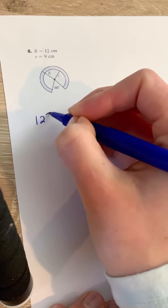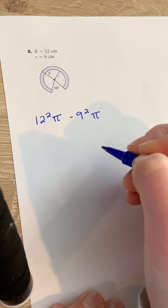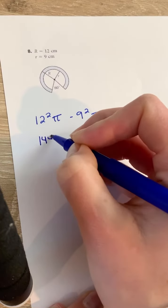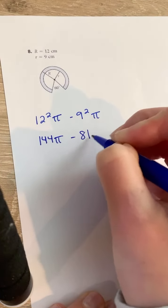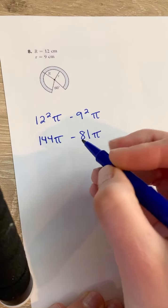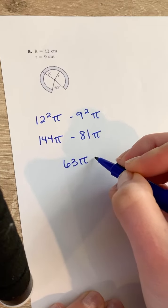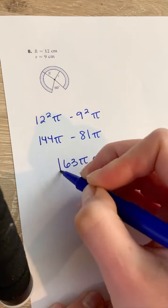You'll have 12 squared pi minus 9 squared pi. Then solve it, so you get 144 pi minus 81 pi, and then subtract 144 from 81, so you get 63 pi for the area of your annulus.